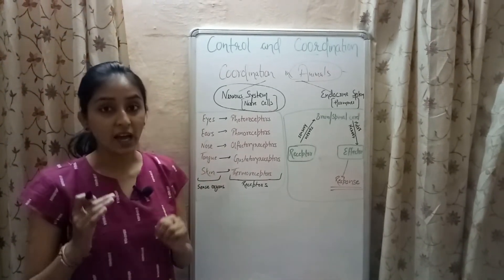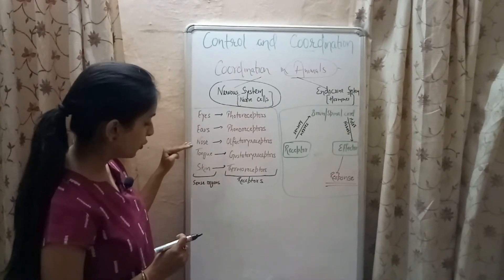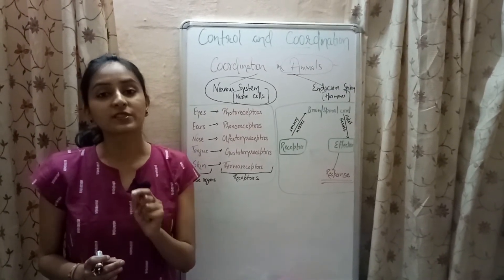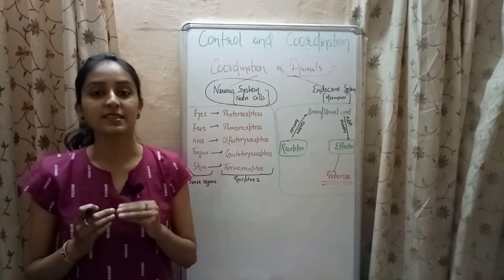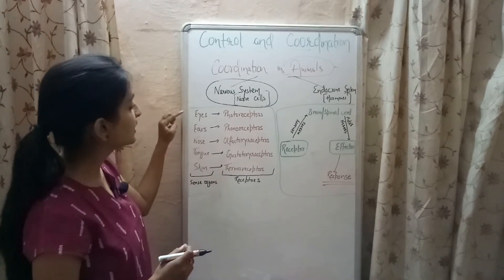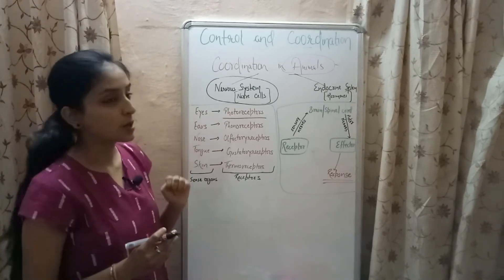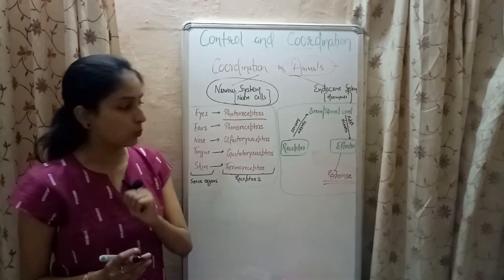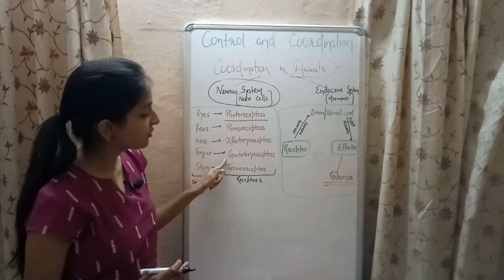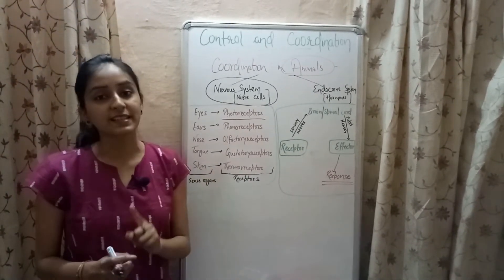In higher animals like humans there are five sense organs: eyes, ears, nose, tongue, and skin. These contain cells called receptors that sense changes in the environment. The eyes have photoreceptors (detect light), ears have phonoreceptors (detect sound), nose has olfactory receptors (detect smell), tongue has gustatory receptors (detect taste), and skin has thermoreceptors (detect heat and cold).